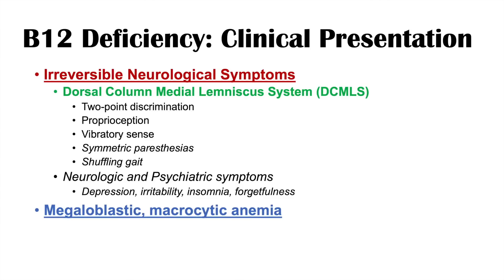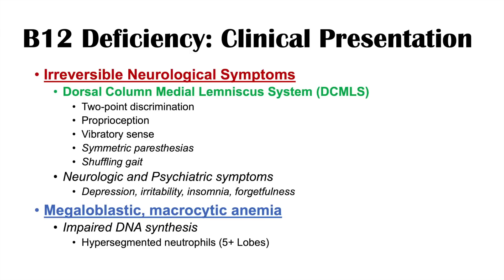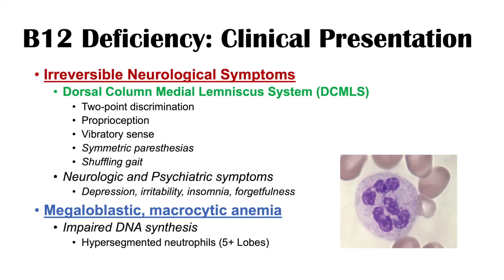B12 deficiency also leads to a megaloblastic macrocytic anemia. Macrocytic anemia means the MCV of a red blood cell is generally greater than 100, and megaloblastic means there's impaired DNA synthesis. When we look at neutrophils, they are hypersegmented with five or more lobes. You can see in this image more than five lobes — it is hypersegmented and megaloblastic. You're also going to get symptoms of anemia such as shortness of breath, pallor, and fatigue.